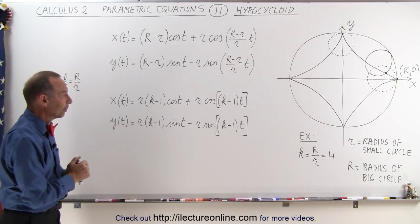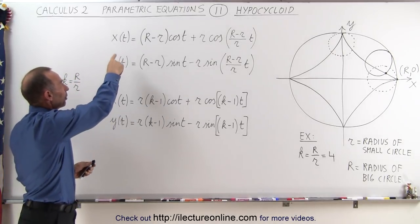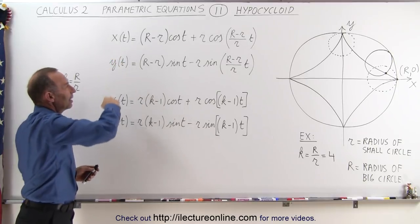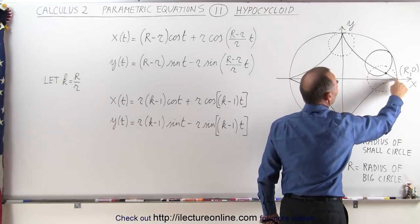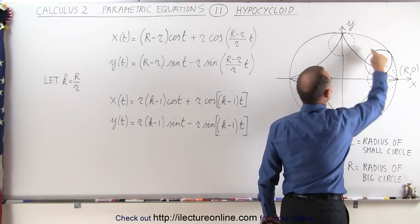And you see that if you then plug in various values for t and go all the way around, notice that when we go from 0 to 2π that will move the edge of the small circle from here to there.